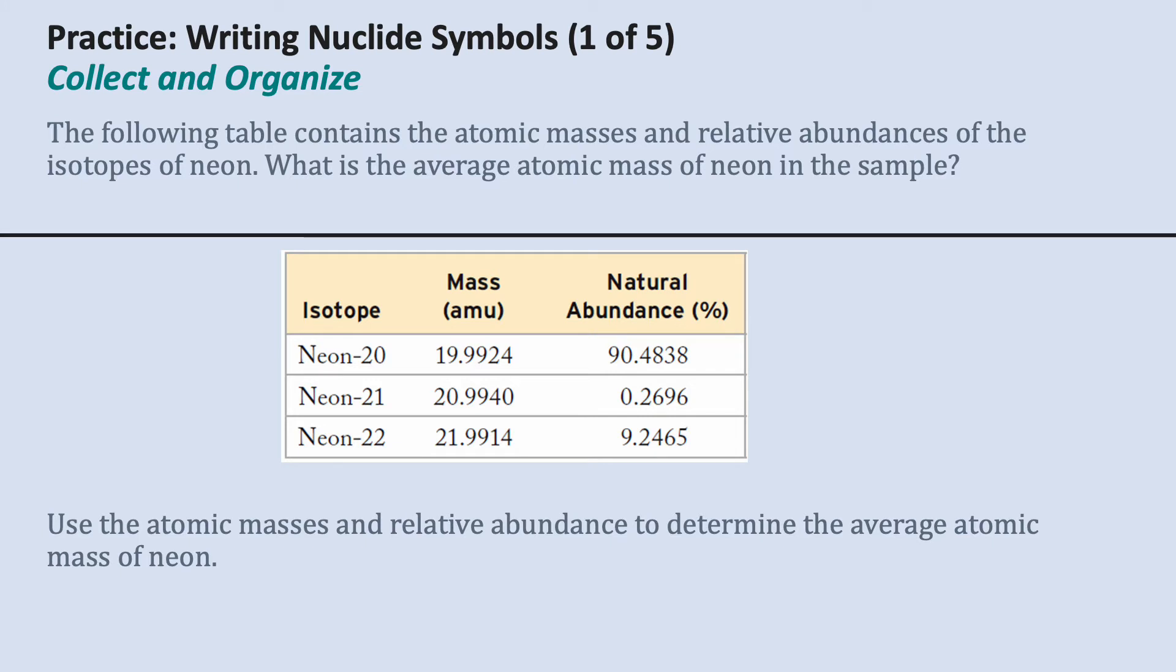Everything is in the table already. To calculate the average atomic mass as a weighted average, we need to know the masses of the individual isotopes and their percent abundances, and we have all of that here.